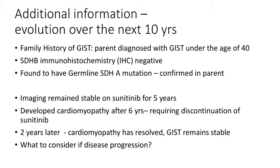SDH-deficient GIST can have a very indolent course at some periods of time — meaning it doesn't change much and can just stay stable. This was a case of that, where the disease was stable for years off all treatment. The question then becomes: what would we do if it did start to progress? I'll ask my colleagues — what would you do next if it started to progress again, now that she's off treatment?